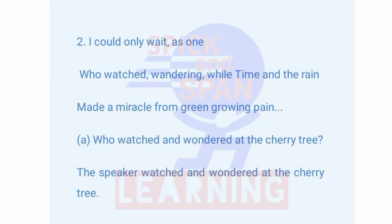Context 2: 'I could only wait as one who was wandering while time and the rain made a miracle from green growing pain.' Question A: Who wondered at the cherry tree? The speaker was the one who wondered at the cherry tree.